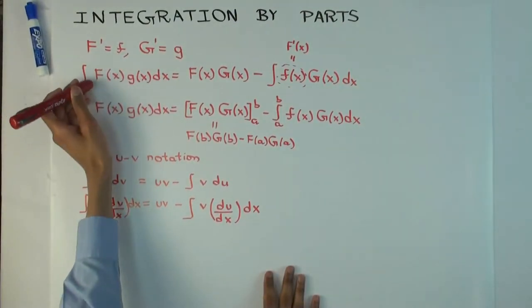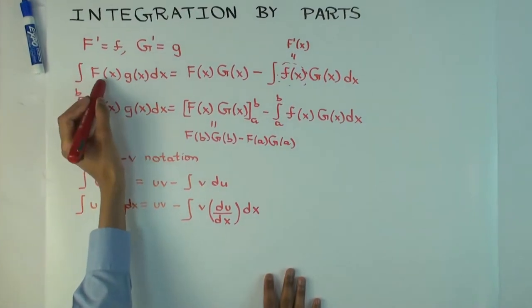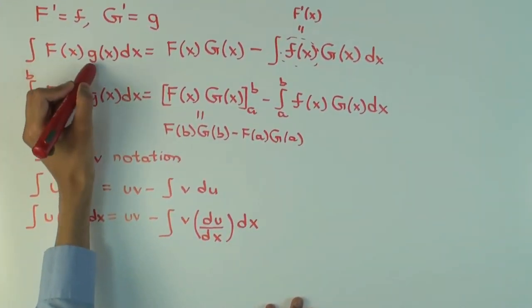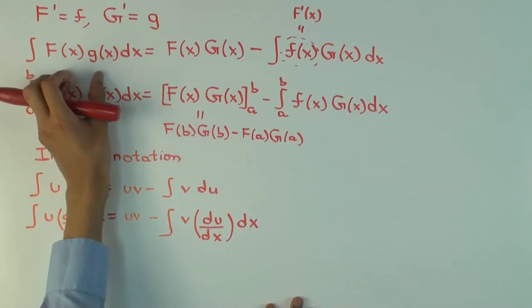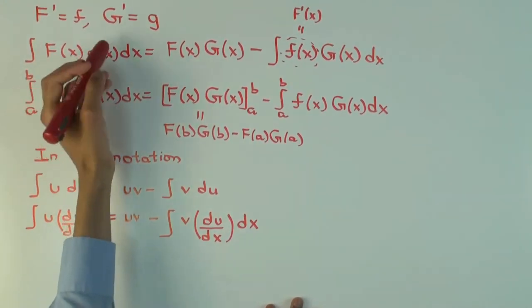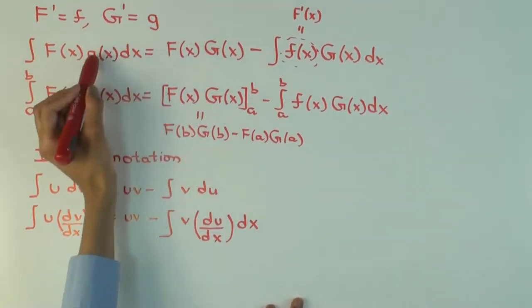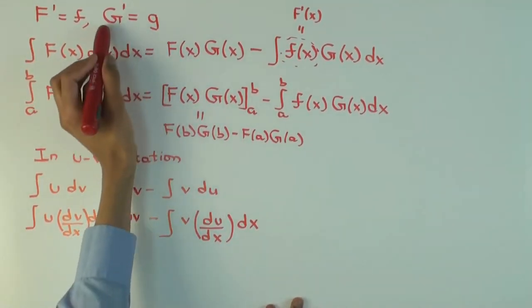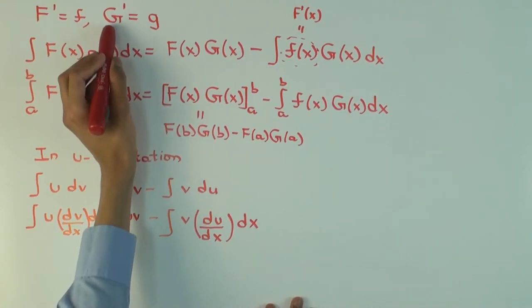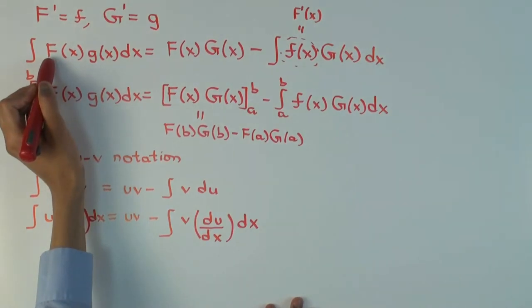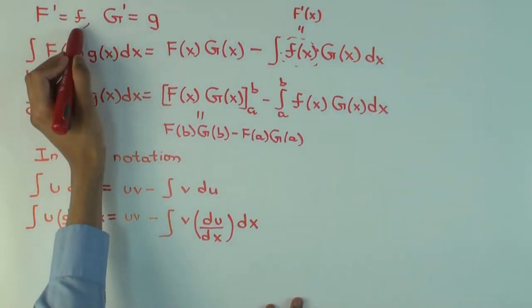Here's how. So suppose I have an integration problem like integral of little f(x), sorry, capital F(x) times little g(x). It's a product of two functions. Now suppose I can find a function capital G whose derivative is little g. So I've taken this piece and I found an antiderivative for it called capital G. And simultaneously, suppose I've found the derivative for capital F and I call that little f.